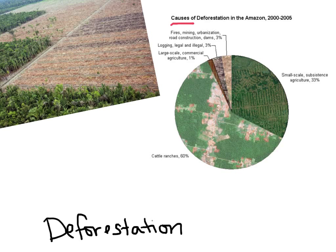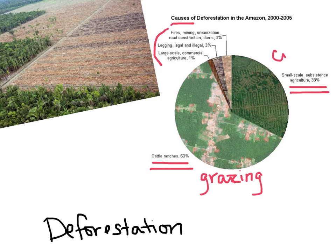Rainforests have very high productivity levels, which means they're supplying a lot of the oxygen that we breathe and a lot of the nutrients for a very diverse ecosystem. Notice that 60% of deforestation occurs for cattle ranches — the trees are being cut down and then burned, increasing climate change. It's not primarily for logging, paper, and things like that. The two major causes of deforestation are for grazing land and for crops.